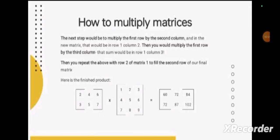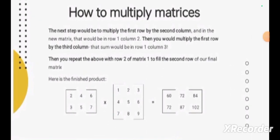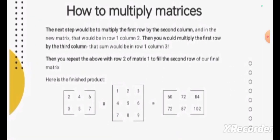Let us continue our example. Now let us see how to multiply the remaining terms. The next step would be to multiply the first row by the second column, and in the new matrix that would be in row 1, column 2. Then you would multiply the first row by the third column — that sum would be in row 1, column 3. Then you repeat the above with row 2 of matrix 1 to fill the second row of our final matrix. Here is the finished product.